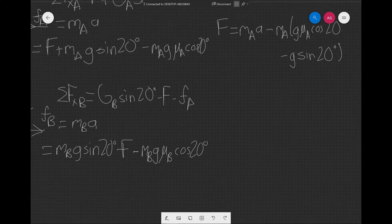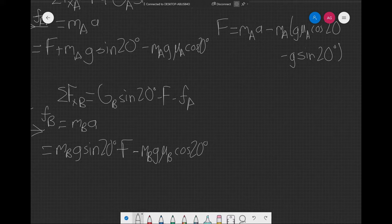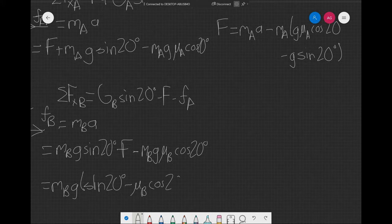Now I'm going to substitute that in the other equation. I'm going to be factoring right here—this M_B shows up, M_B G shows up in both terms, so I'm going to have M_B G, sine 20 minus mu_B cosine 20, minus what we have here.